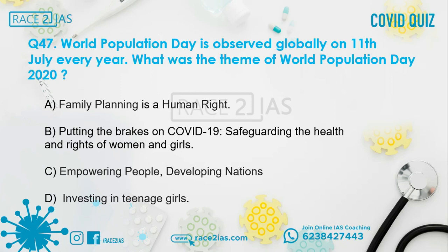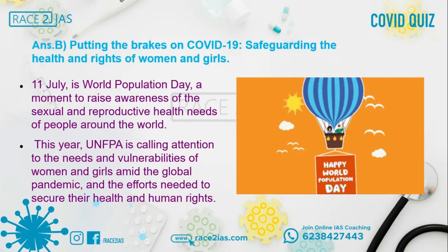Question number 47: World Population Day is observed globally on 11th July every year. What was the theme of World Population Day 2020? Option A: Family planning — a human right. Option B: Putting the brakes on COVID-19, safeguarding the health and rights of women and girls. Option C: Empowering people, developing nations. Option D: Investing in teenage girls. The right answer is Option B. UNFPA is calling attention to the needs and vulnerabilities of women and girls amid the global pandemic and the efforts needed to secure their health and human rights.